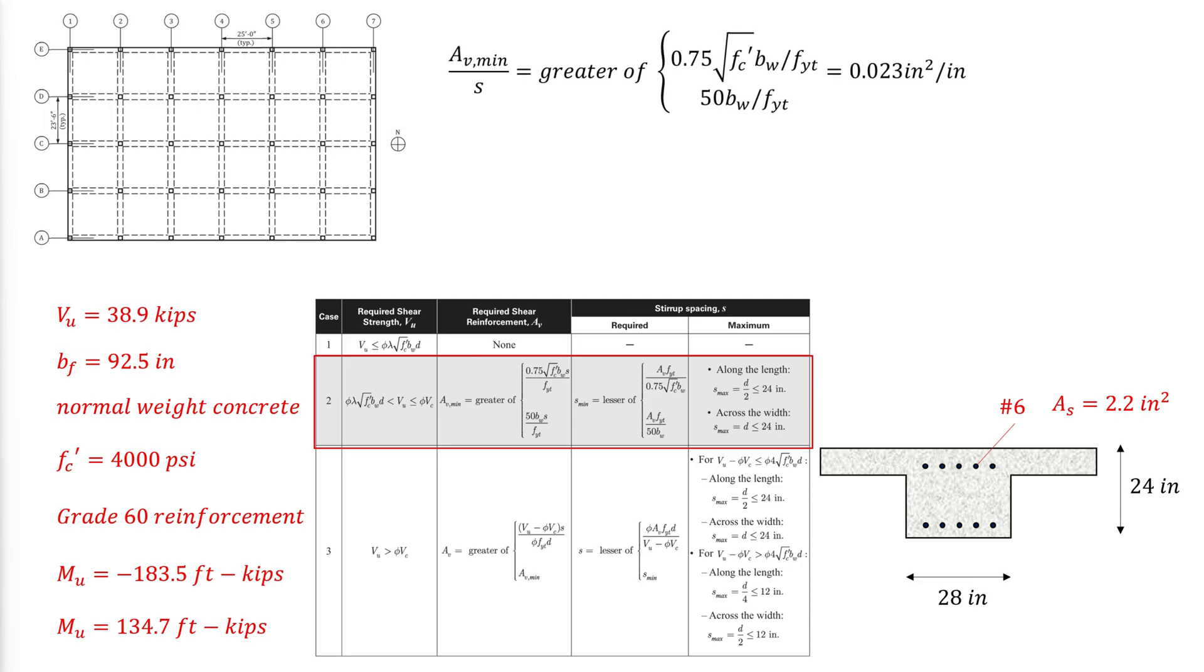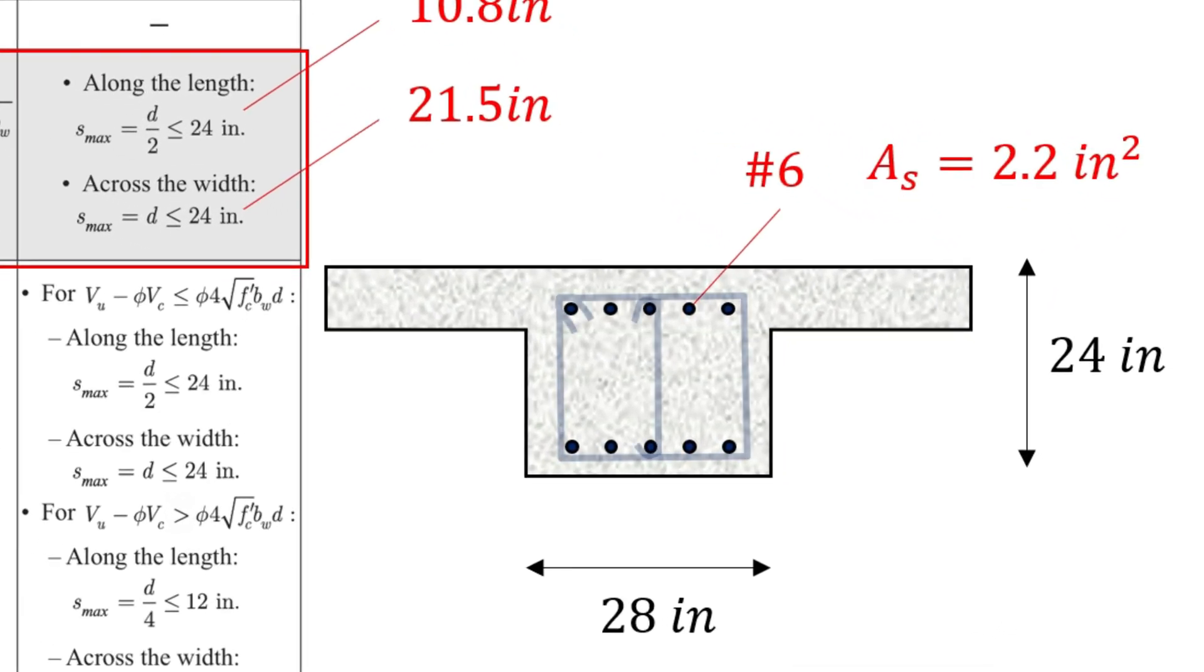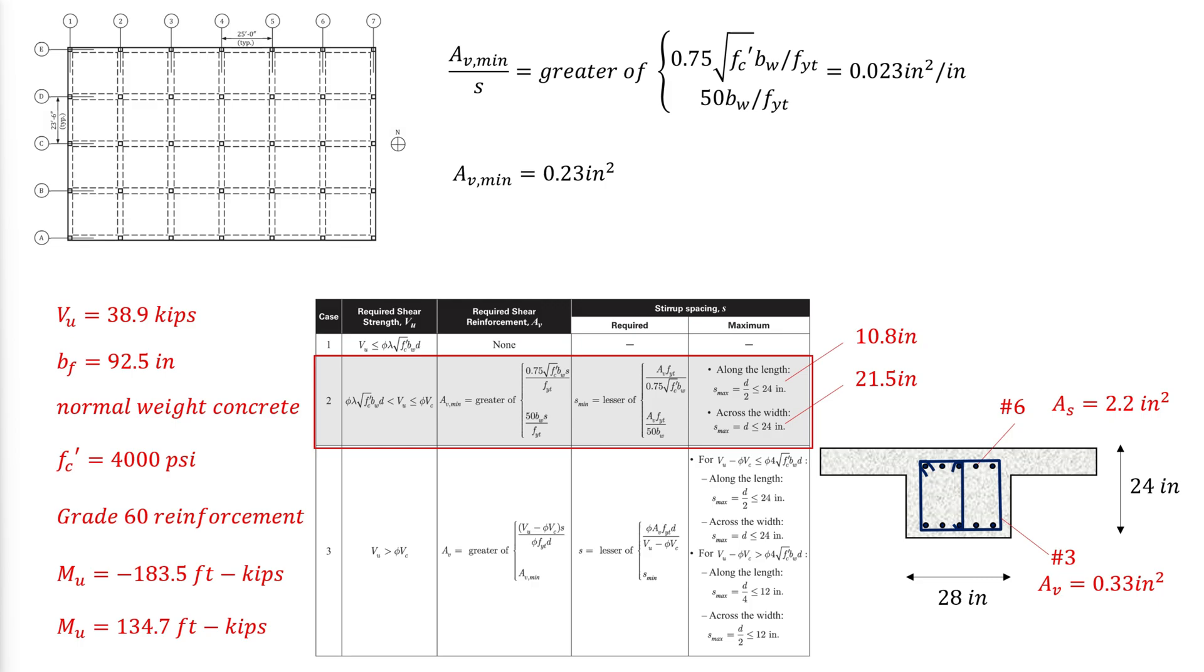Then, the minimum reinforcement per spacing is determined as such. Considering a reinforcement spacing of 10 inches which meets the requirements for maximum allowable longitudinal spacing, AV minimum is 0.23 square inches. Across the width of the beam the maximum allowable spacing is 21.5 inches. Assuming two number 4 stirrups with 1.5 inch cover, the spacing across the width is 24.5 inches which is greater than the maximum allowed. Thus, 3 legged stirrups are required. Taking number 3 stirrups gives a shear reinforcement area of 0.33 square inches which is greater than the required minimum. The spacing between them is 10 inches as previously mentioned.